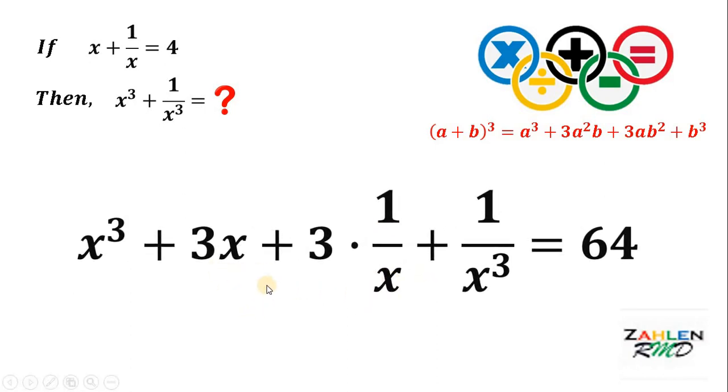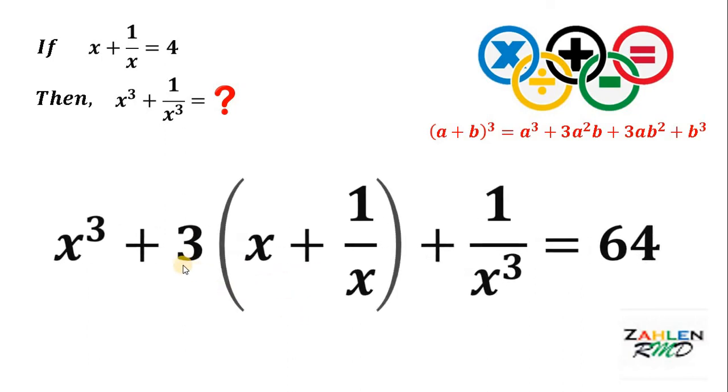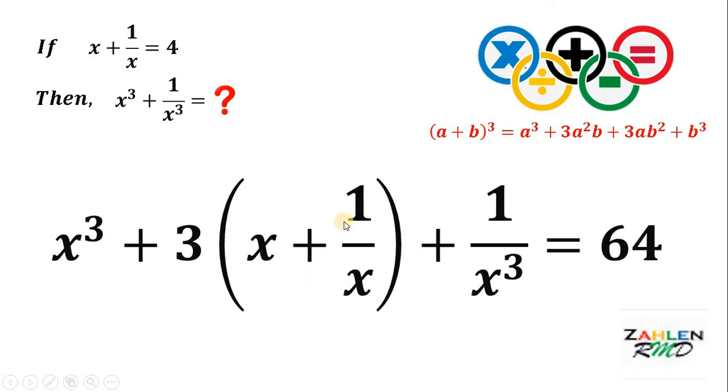On the middle term, notice that we have the same factor of 3. So, we can factor out 3. Thus, we have 3 times x plus 1 over x.